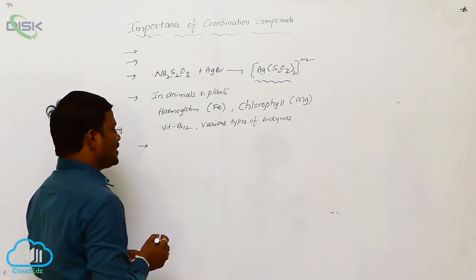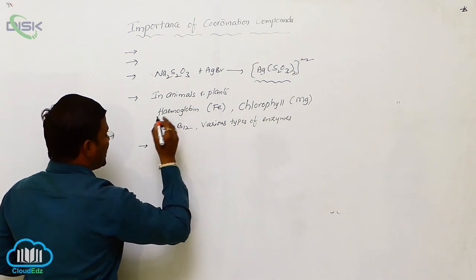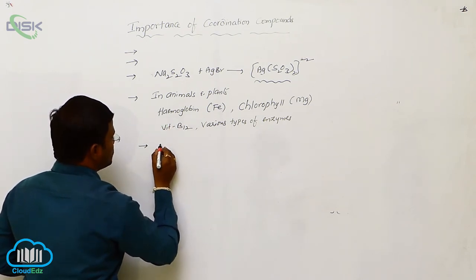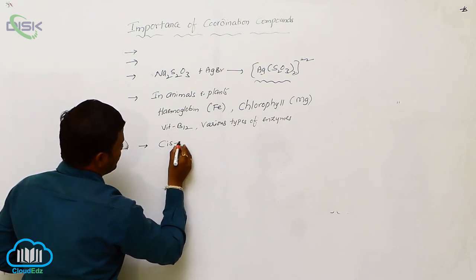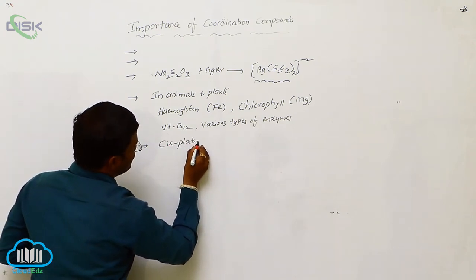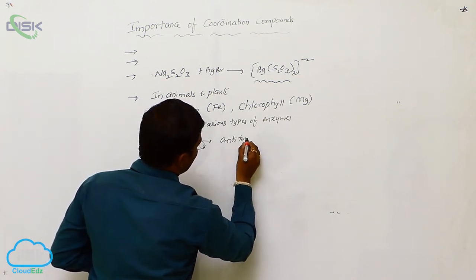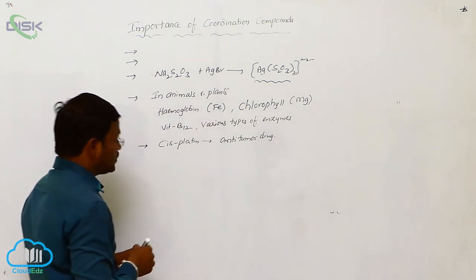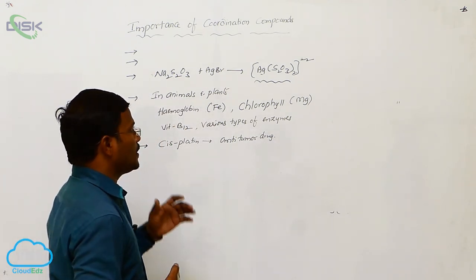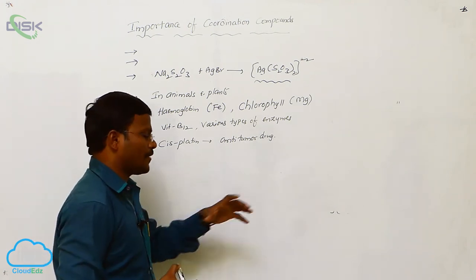Next, during the medicinal field, the coordination complexes or compounds, the most important coordination compound is cisplatin. This cisplatin is used as anti-tumor drug. So, these are some importance or importance of coordination compounds in our life.